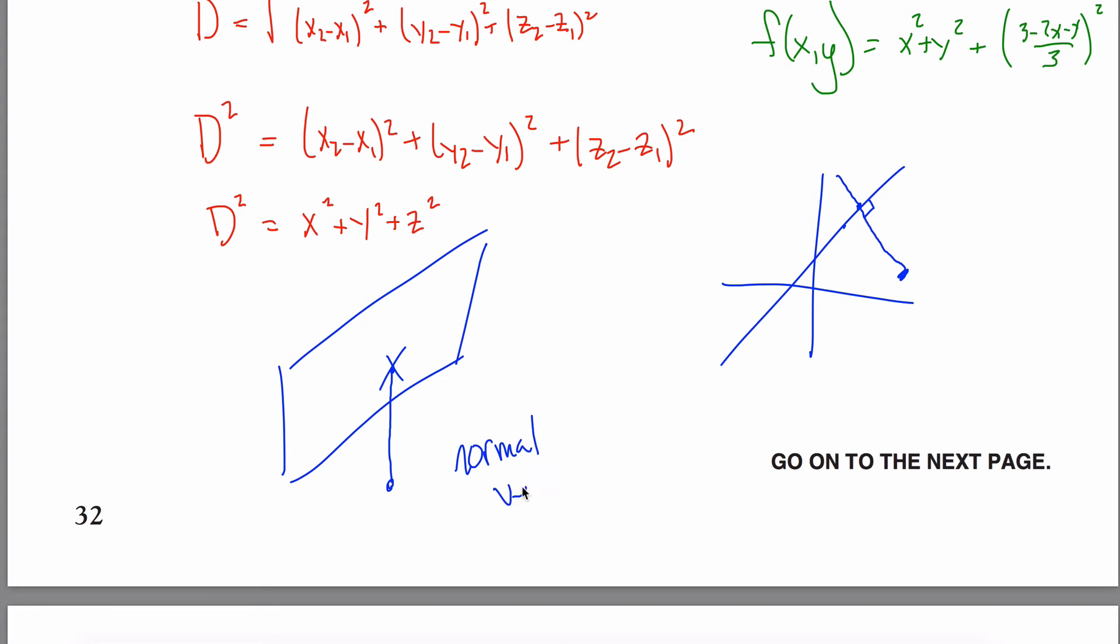And the normal vector is the vector that is perpendicular to any vector on your plane. So whether I'm talking about this vector here or this vector here or one going down here, regardless of which one of those guys I pick, I'll get perpendicular here. And so if I can find the normal vector,